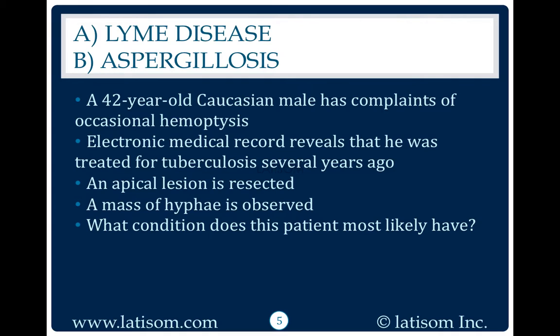A 42-year-old Caucasian male has complaints of occasional hemoptysis. Electronic medical record reveals that he was treated for tuberculosis several years ago. An apical lesion is resected, and a mass of hyphae is observed. What condition does this patient most likely have?